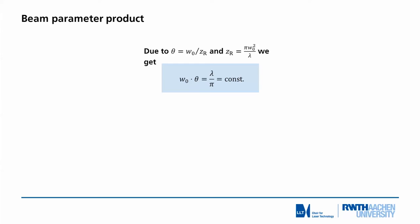If we look at the quantitative derivation of the beam parameter product, we remember from the characteristics of a Gaussian beam that the far field divergence is just the ratio of the beam waist and the Rayleigh length. On the other hand, the Rayleigh length is defined as π w₀² over λ. If you combine these two simple equations we get an even simpler one which tells us that the beam waist times the far field divergence is just λ over π, a constant.